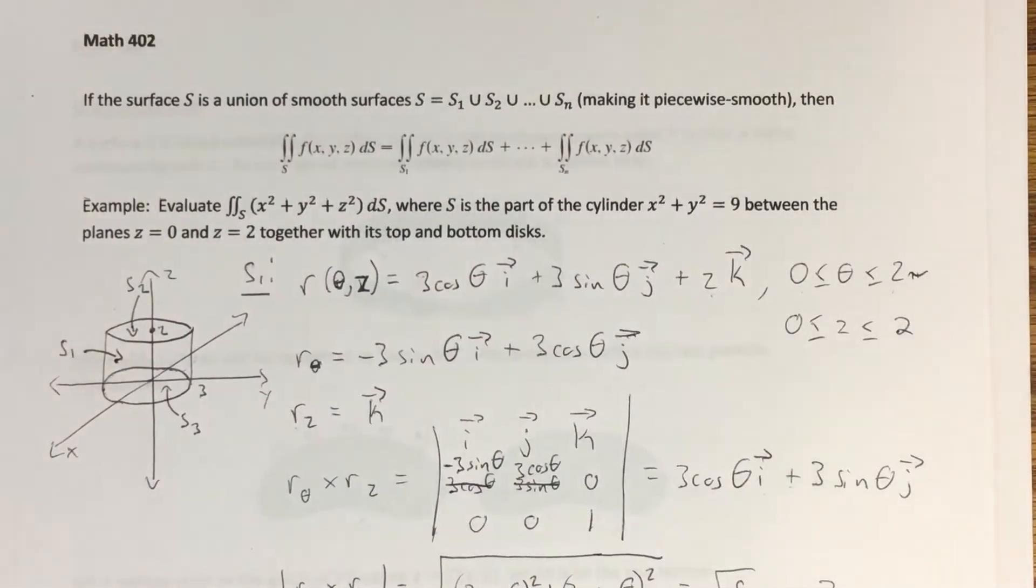Okay, so we set up this problem in the last video where we wanted to take a surface integral of the function x squared plus y squared plus z squared ds over the cylinder that was broken up into these three parts, s1, s2, and s3. This is a very long problem, and that tends to be the case any time we're doing surface integrals of piecewise smooth surfaces made up of more than one piece. So I went ahead and did this problem ahead of time just to streamline it a little bit, and I can talk through the steps.